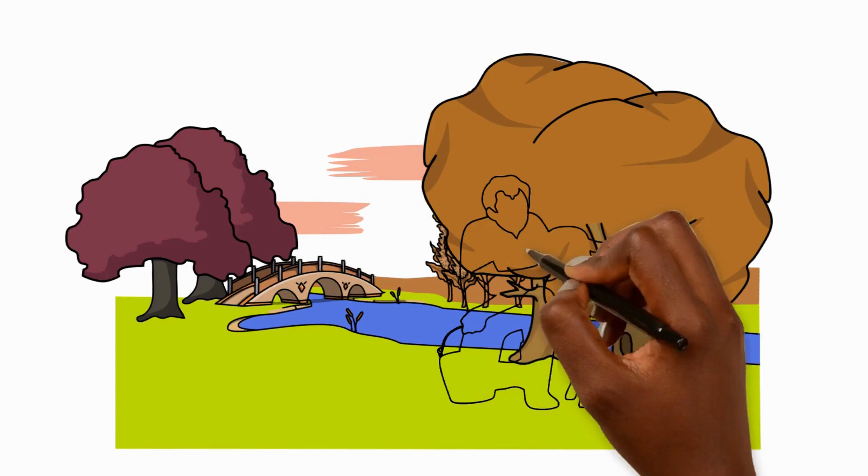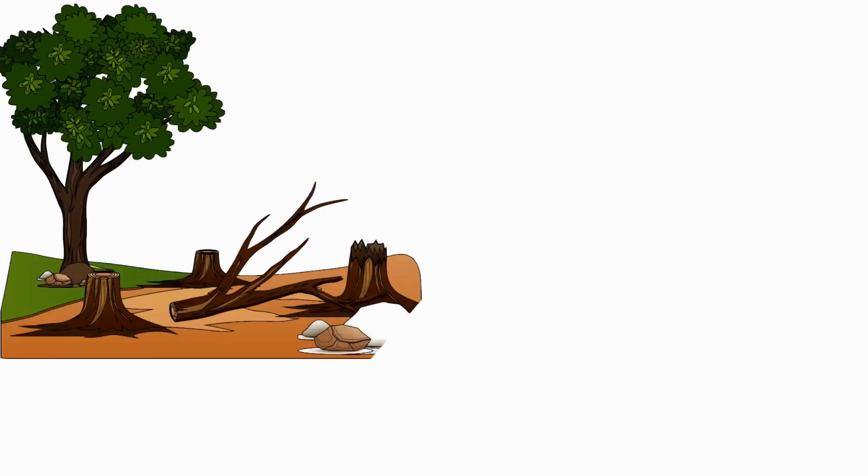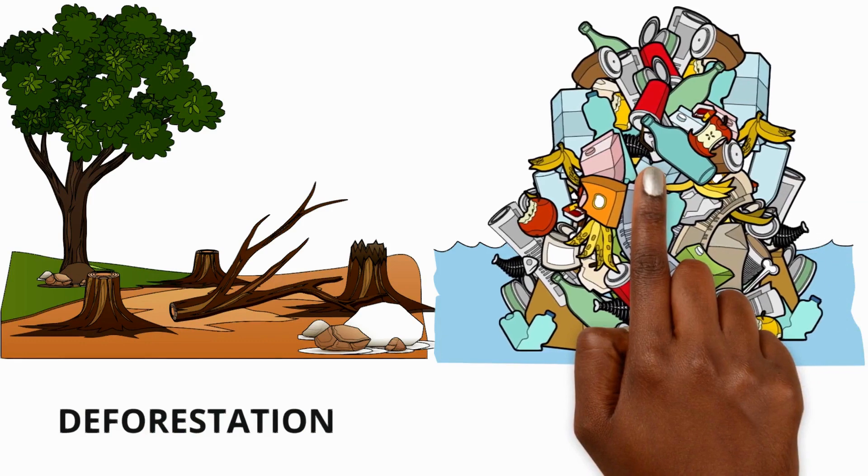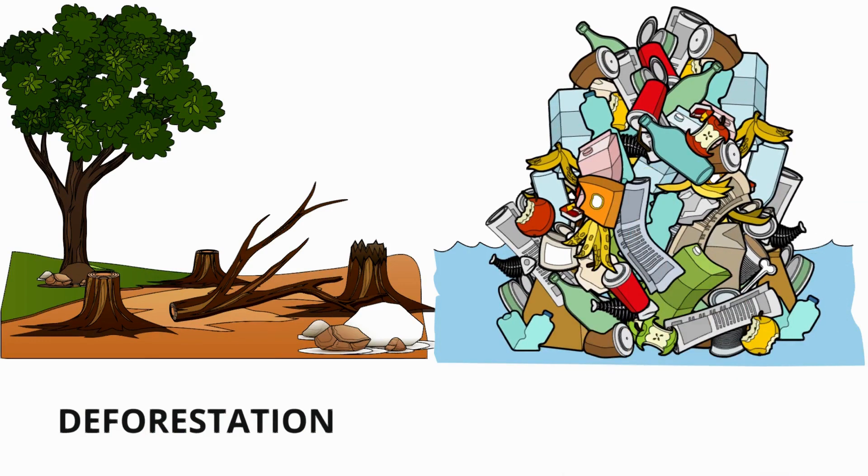Habitats can also be affected by human activity. Cutting down trees and clearing rainforests destroy the amount of shelter and food available for plants and animals. And with the massive amount of litter experts predict that by 2050 there will be more litter than fish in the oceans.